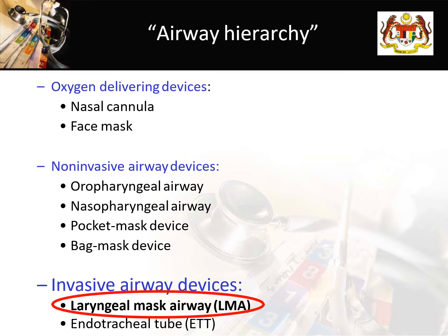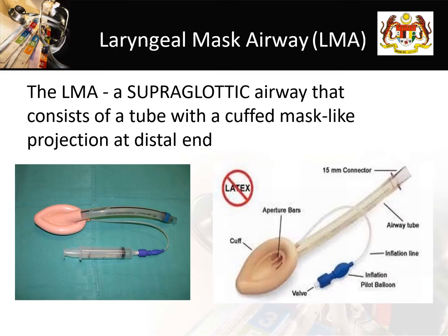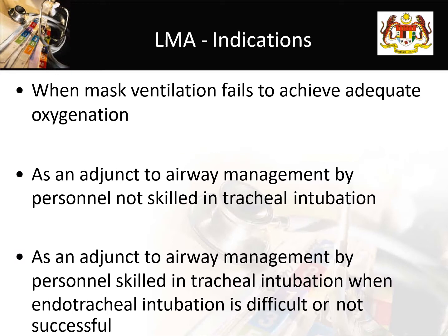Next, we will talk about the LMA — the laryngeal mask airway. The LMA is a supraglottic device that consists of a tube with a cuff mask-like projection at the distal end. Looking at its anatomy, we have the airway tube that delivers oxygen via the aperture bars to the vocal cords and subsequently to the lungs, while the hypopharynx is sealed by the cuff inflated by the pilot balloon. The LMA is typically used in pre-hospital airway management, as a rescue device in difficult airway situations, and in the operating theatre for short procedures.